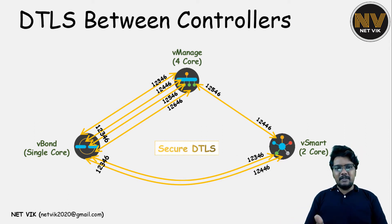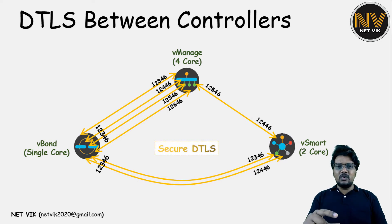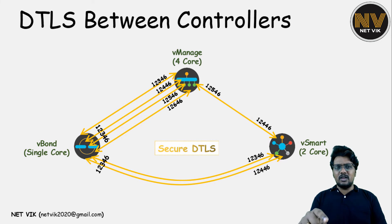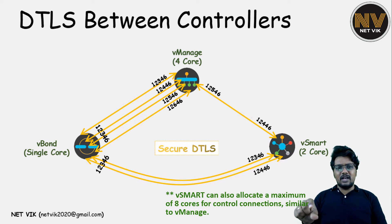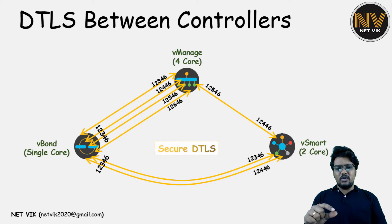One more thing: when you bring up a vManage and allocate 32 vCPUs, that doesn't mean that when you do a show control local properties you are going to see 32 cores allocated. vManage will maximum allocate only 8 cores for the control connection out of the 32 vCPUs. If you have only 8 vCPUs allocated, it is going to use all those for control connection purpose as well. vSmart will also do a similar thing — even when allocated more vCPUs, he is not going to use all those for control connections; he is going to use a restricted number. And in vBond, even if you have 4 or 8 vCPUs allocated, he is always going to use only one of his cores for the control connection, listening on ports 1, 2, 3, 4, 6.